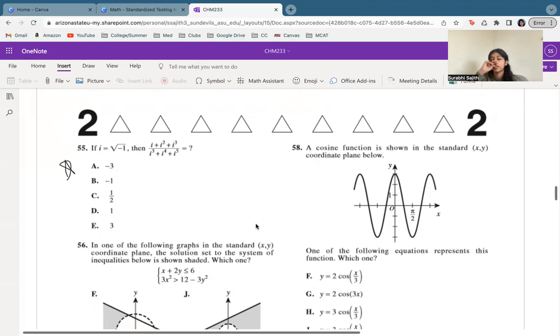All right, so in this case, we have i equals square root of negative one. So what's critical to know is if i equals the square root of negative one, i squared is always equal to negative one. That also means i to the fourth equals positive one. So now let's take that information and plug it in. i plus i squared plus i cubed equals i cubed plus i to the fourth plus i to the fifth.